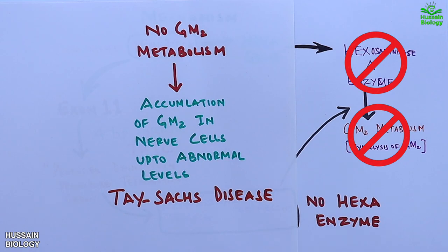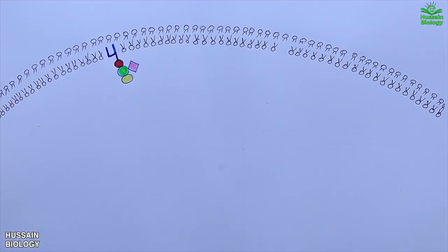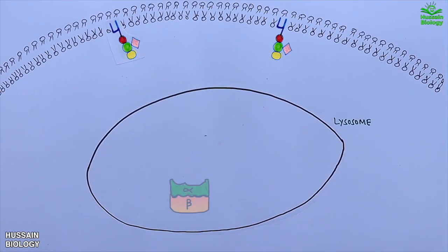If we illustrate this in an animation, we see we have the cell with GM2 ganglioside on the plasma membrane. Within the cell we have the lysosome with hexa enzyme shown in green color. The GM2 activator protein takes out the GM2 ganglioside from the membrane and delivers it to the hexa enzyme, which hydrolyzes this GM2 lipid to GM3 as shown in the animation.